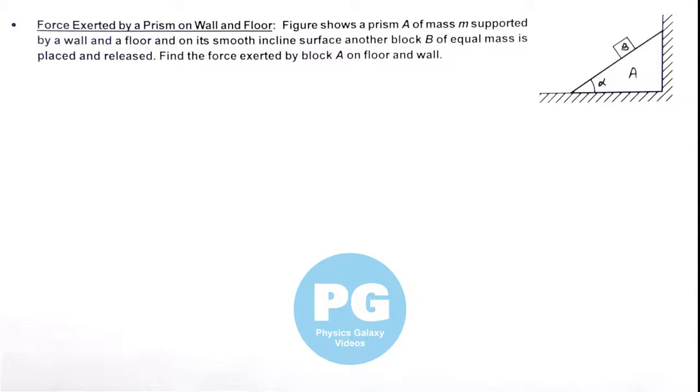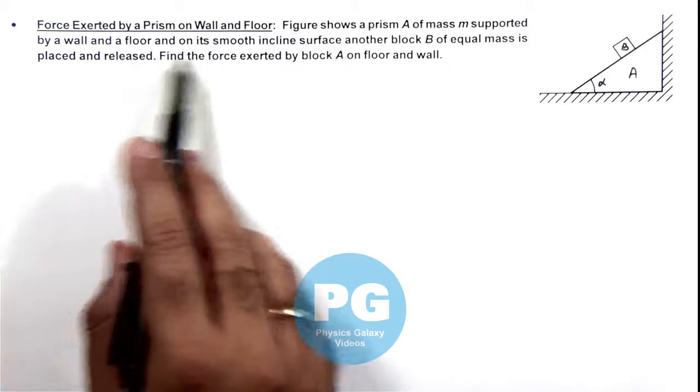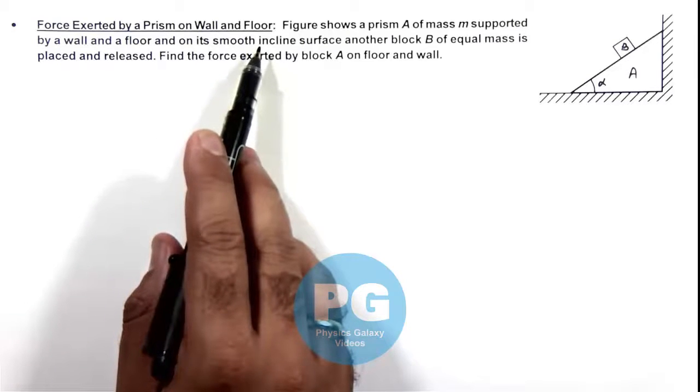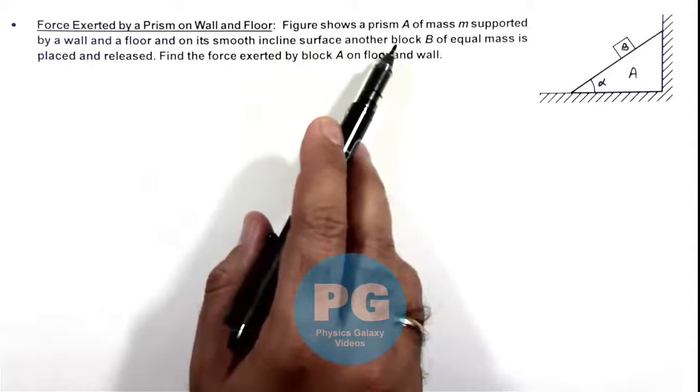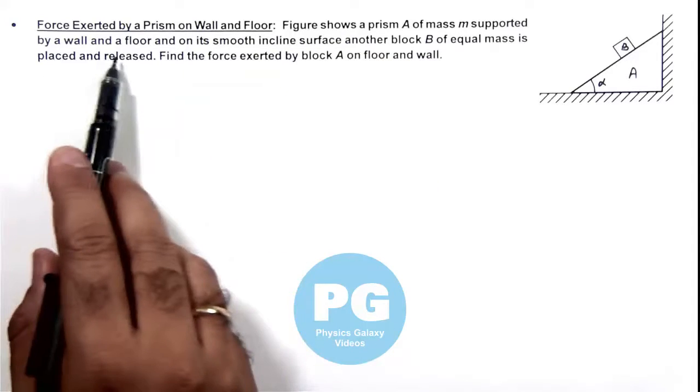In this illustration we'll analyze the force exerted by a prism on wall and floor. Here, we are given that the figure shows a prism A of mass m supported by wall and floor.